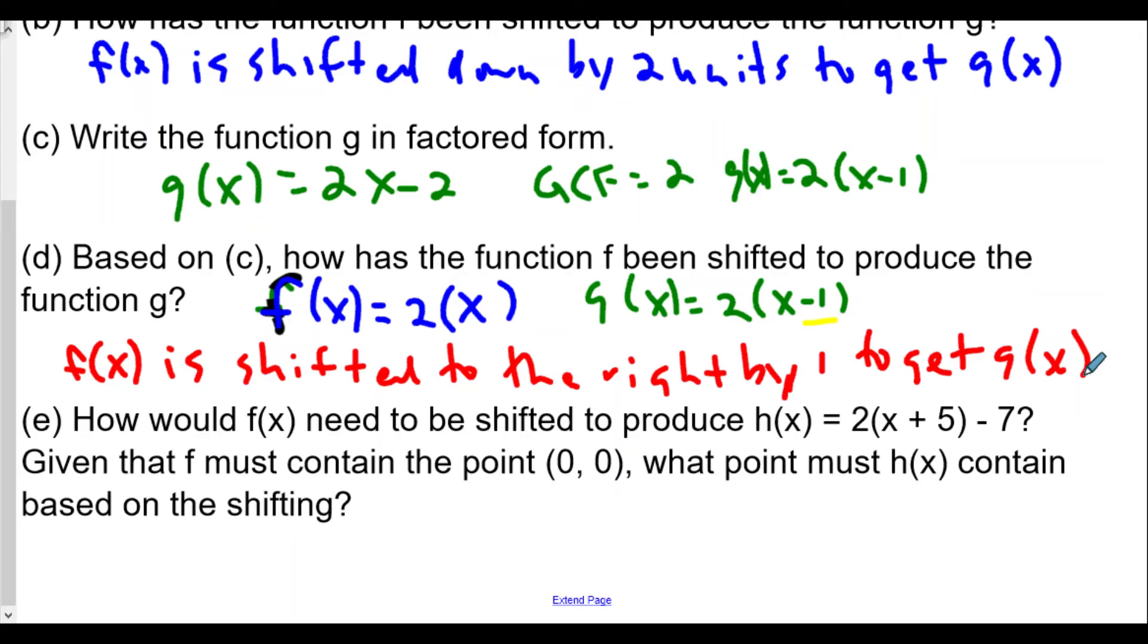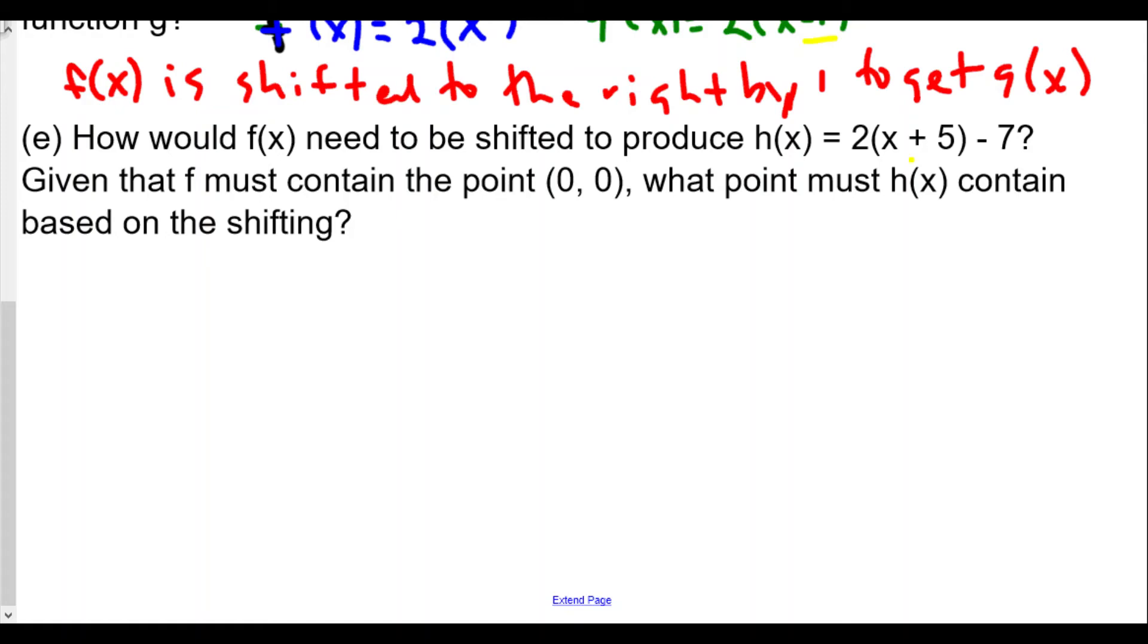Part (e): How would f(x) need to be shifted to produce h(x) = 2(x + 5) - 7? Given that f must contain the point (0, 0), what point must h(x) contain? We see the plus five here for h(x) means we're going to shift f(x) to the left by five. The minus seven means we're going to shift f(x) down seven units.